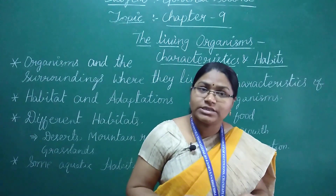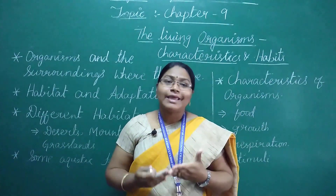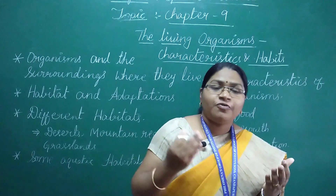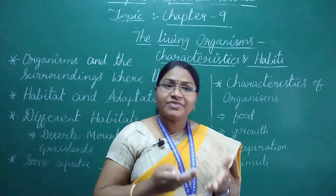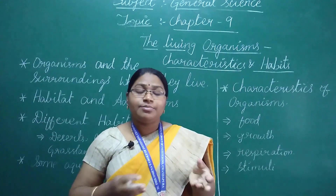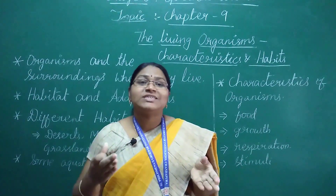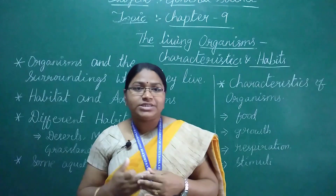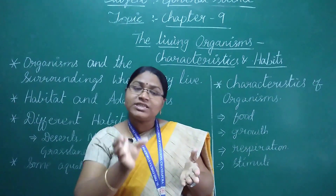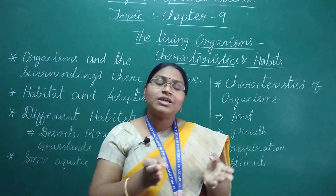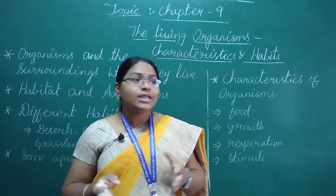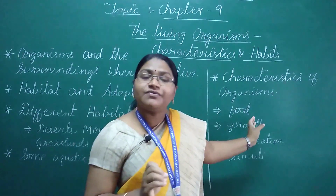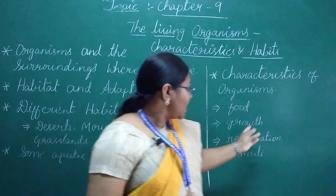The last point is characteristics of organisms. Every living organism consists of some characteristics which help to survive their lives. For example, food — humans have so many food habits. Some are vegetarian, some are non-vegetarian. The type of food-taking process varies. Some eat only vegetables; some eat both vegetables and meat. Based on this food-taking process, we can differentiate whether they are carnivores, herbivores, or omnivores.